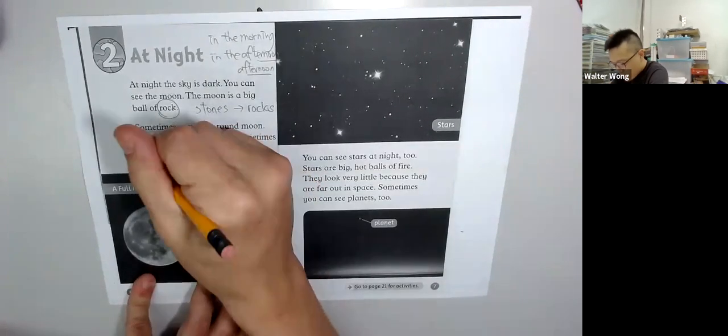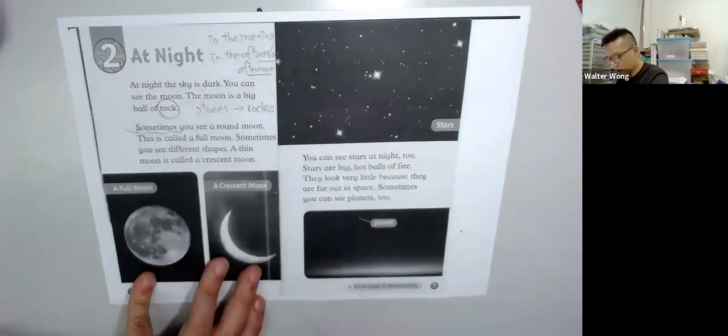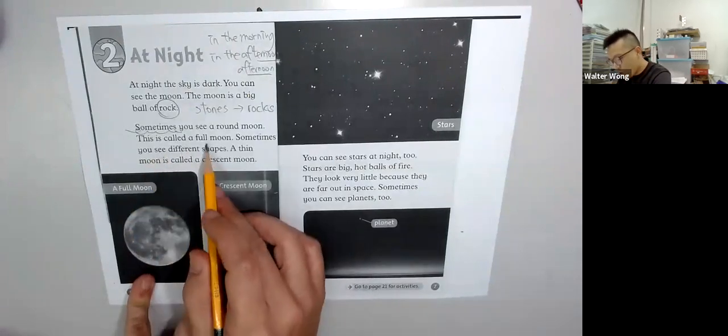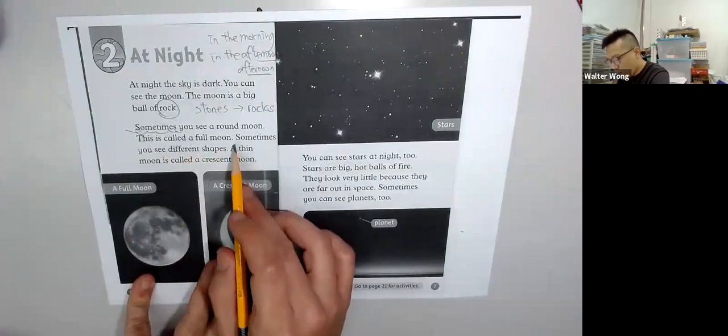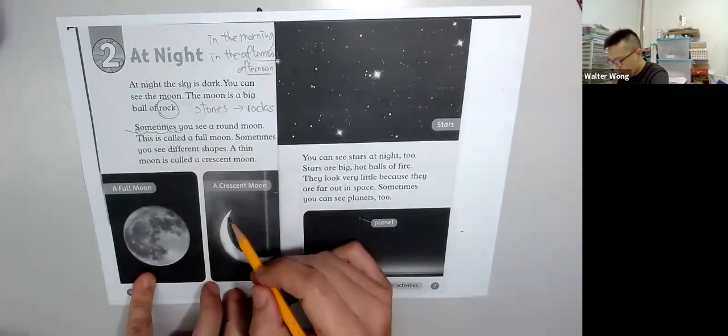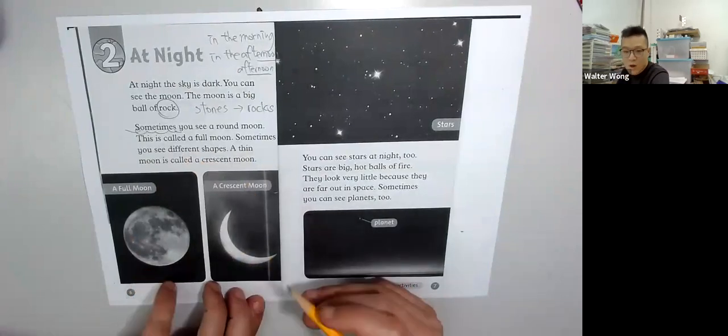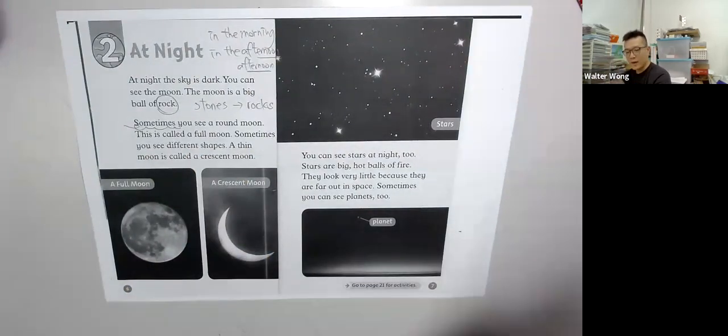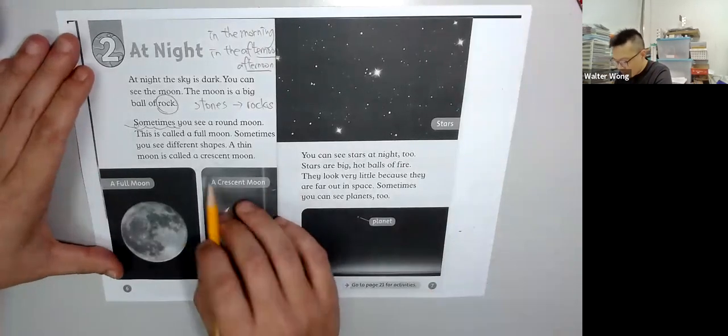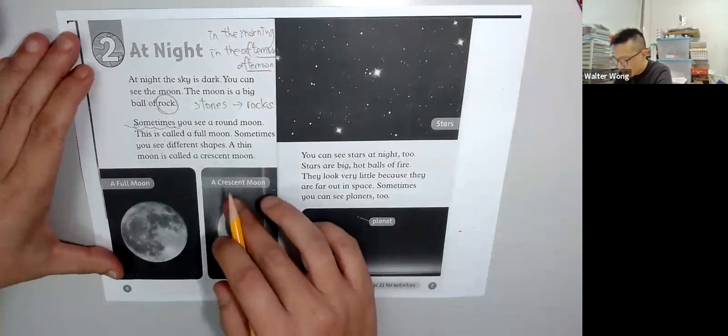Sometimes, you see a round moon. This is a round moon, and it is called a full moon. Sometimes you see different shapes. 像一把刀, 煉刀. A thin moon, crescent moon.